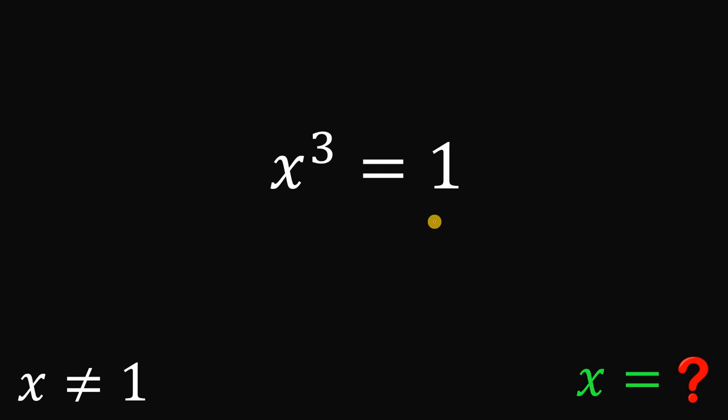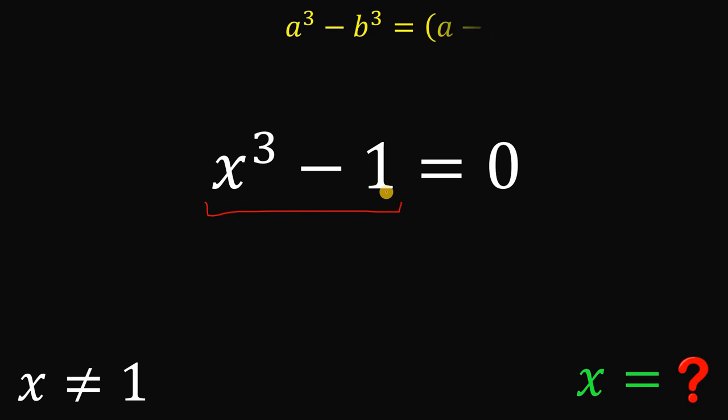Now equate this to 0, subtract 1 on both sides. And then let's try to factor x cubed minus 1. Now, take note that this 1 is just 1 cubed. So we can apply this identity.